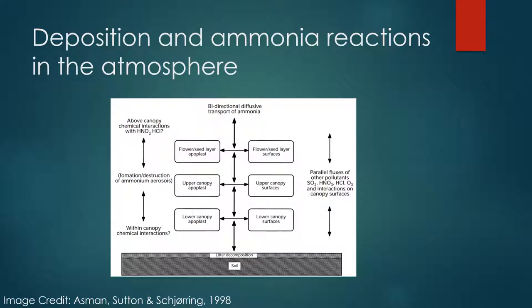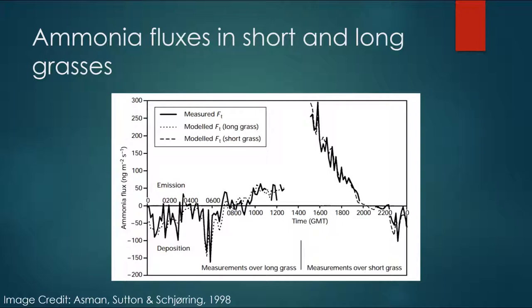This chain of reactions in the atmosphere not only changes the chemical structure of some parts of the balanced atmosphere, it also affects the deposition rate of the ammonia in the biosphere. Not only does it begin to affect the atmosphere, it also affects the biosphere and the plants and animals.